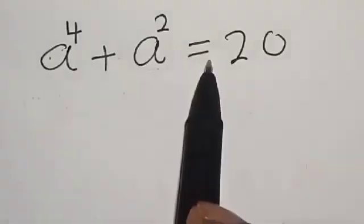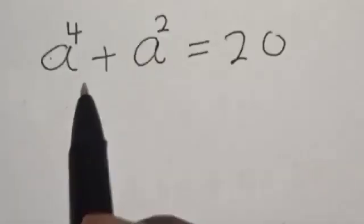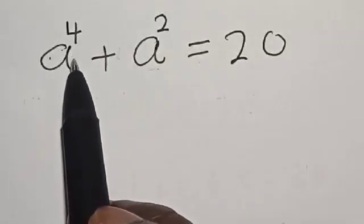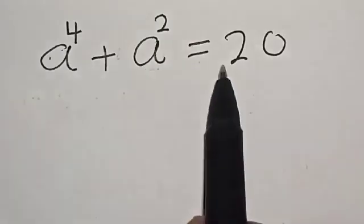a raised to power 4 plus a square is equal to 20. Hi everyone, welcome to my class. In this class, we want to find the value of a from this given equation: a raised to power 4 plus a square is equal to 20.